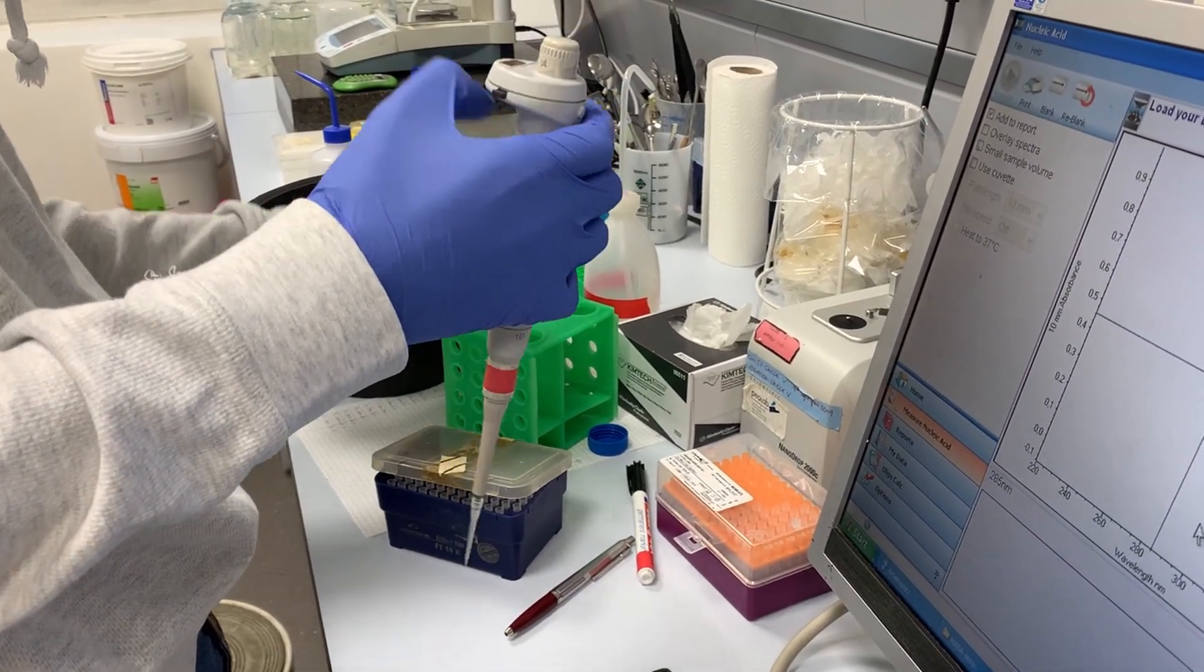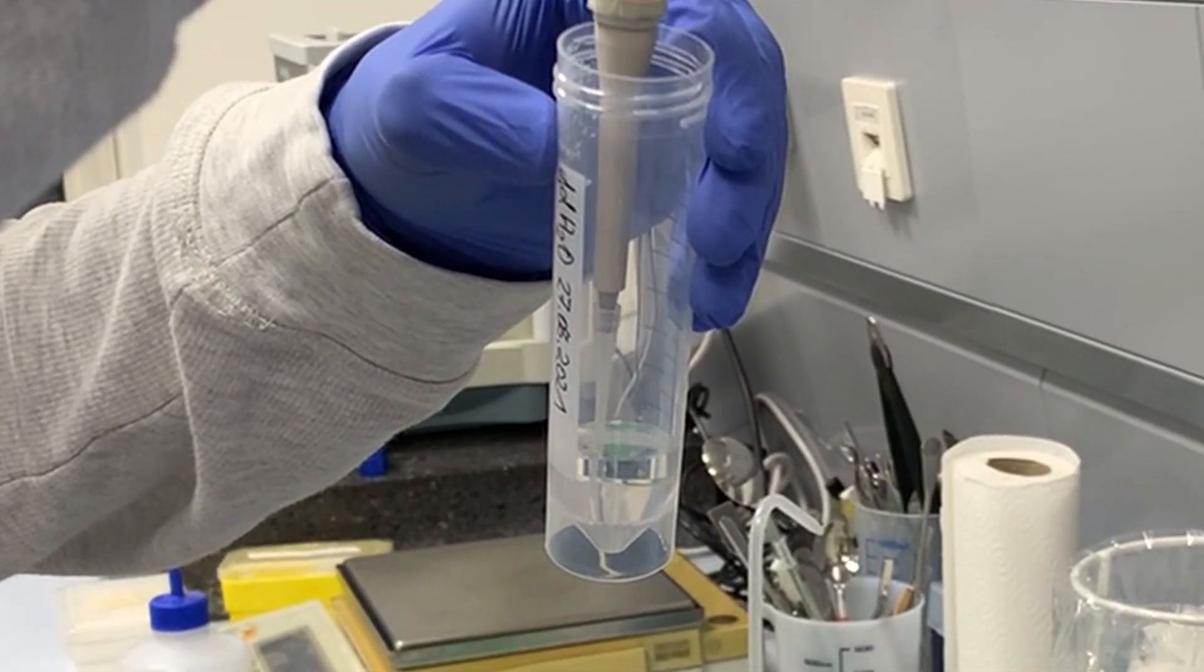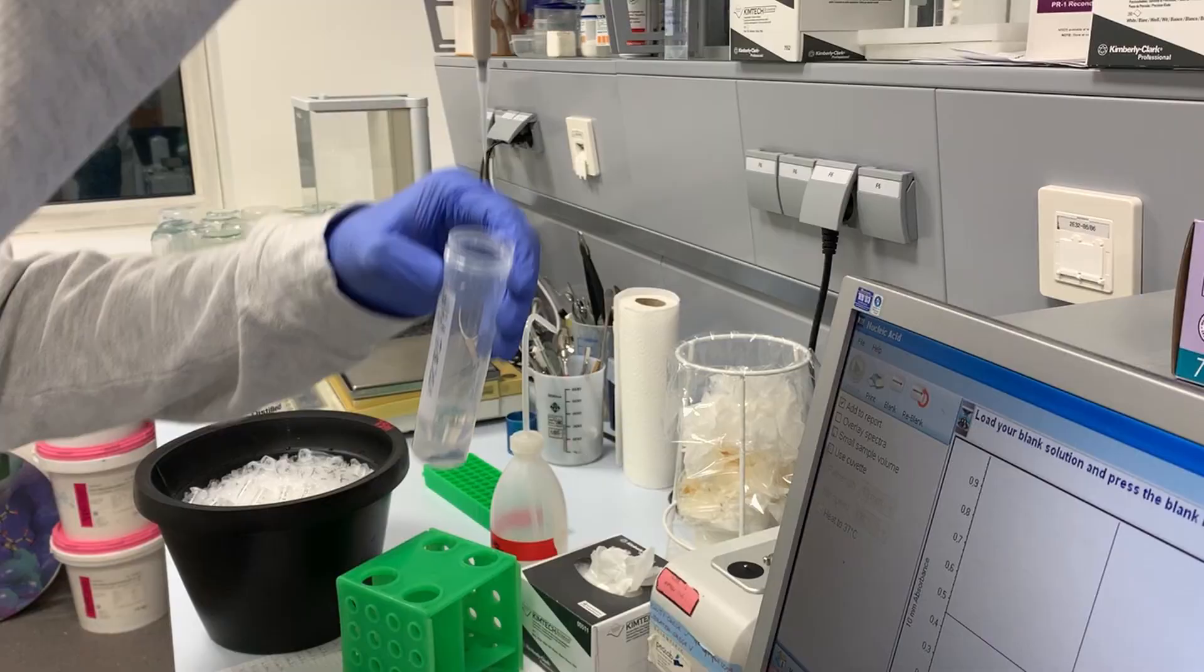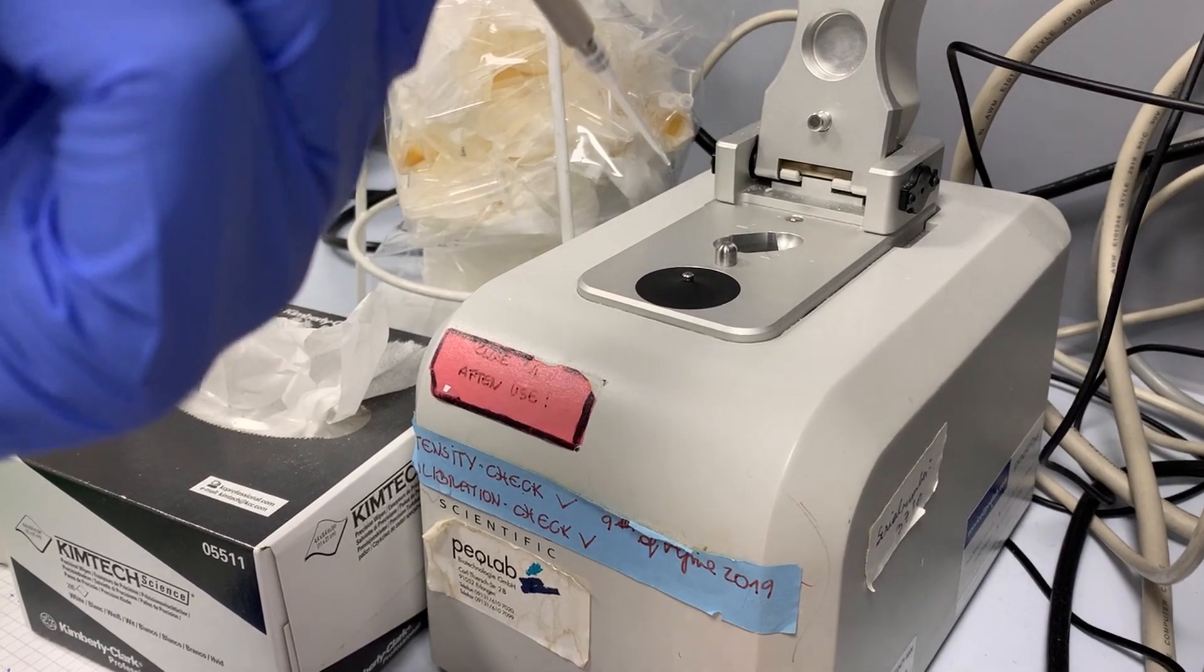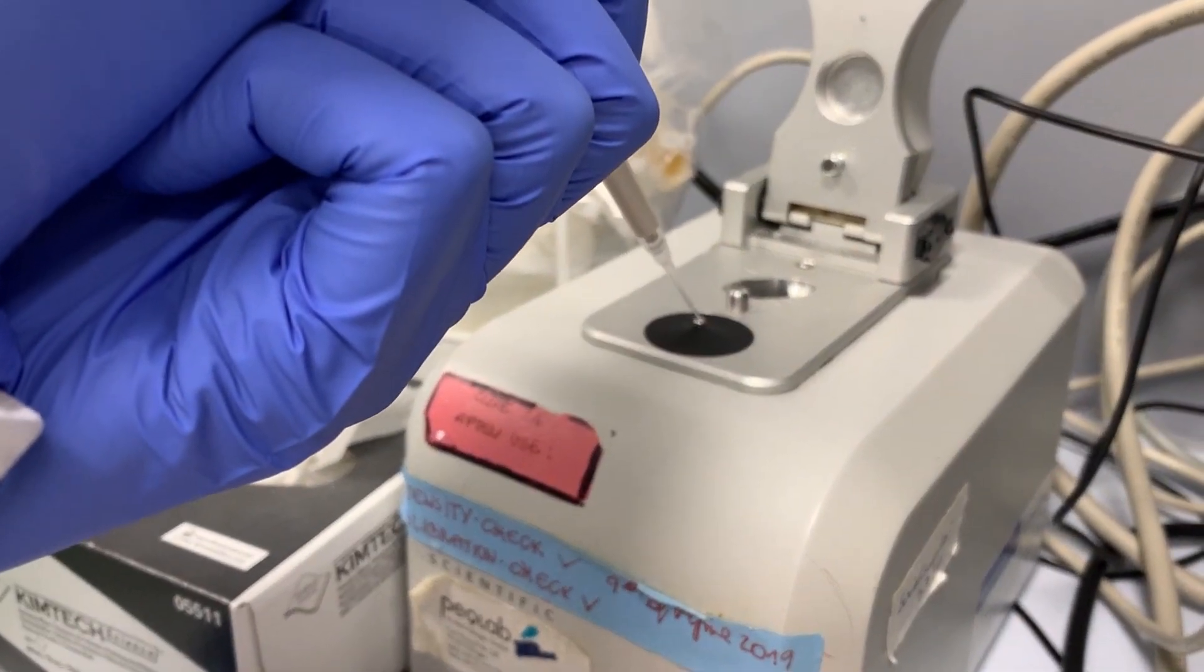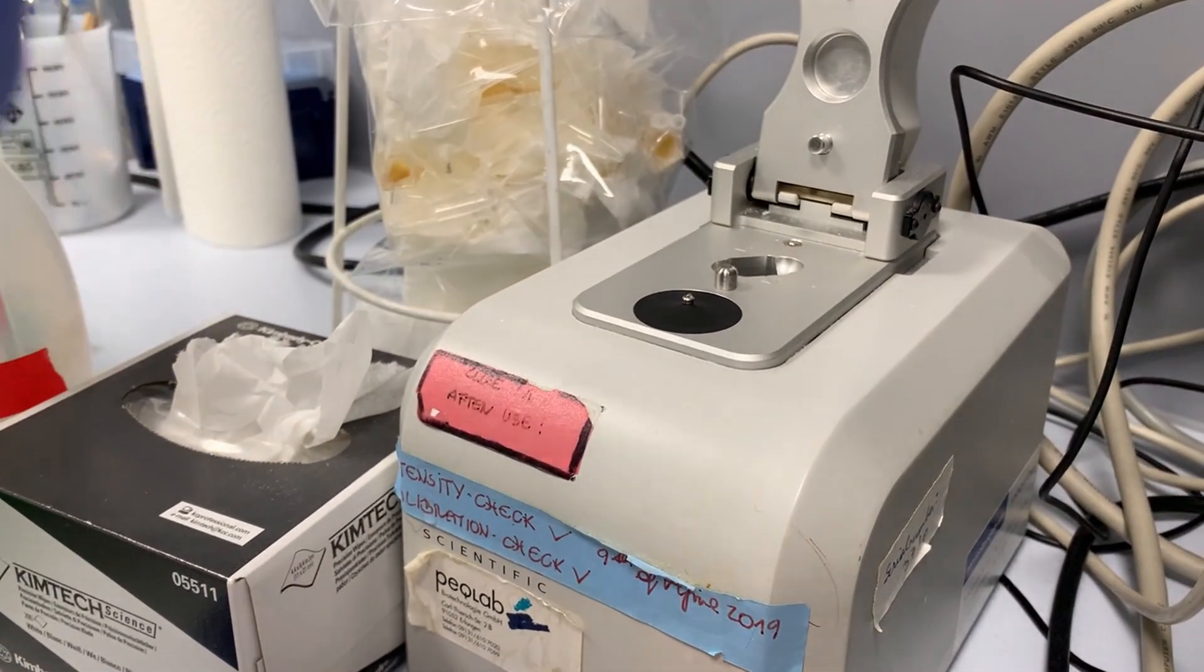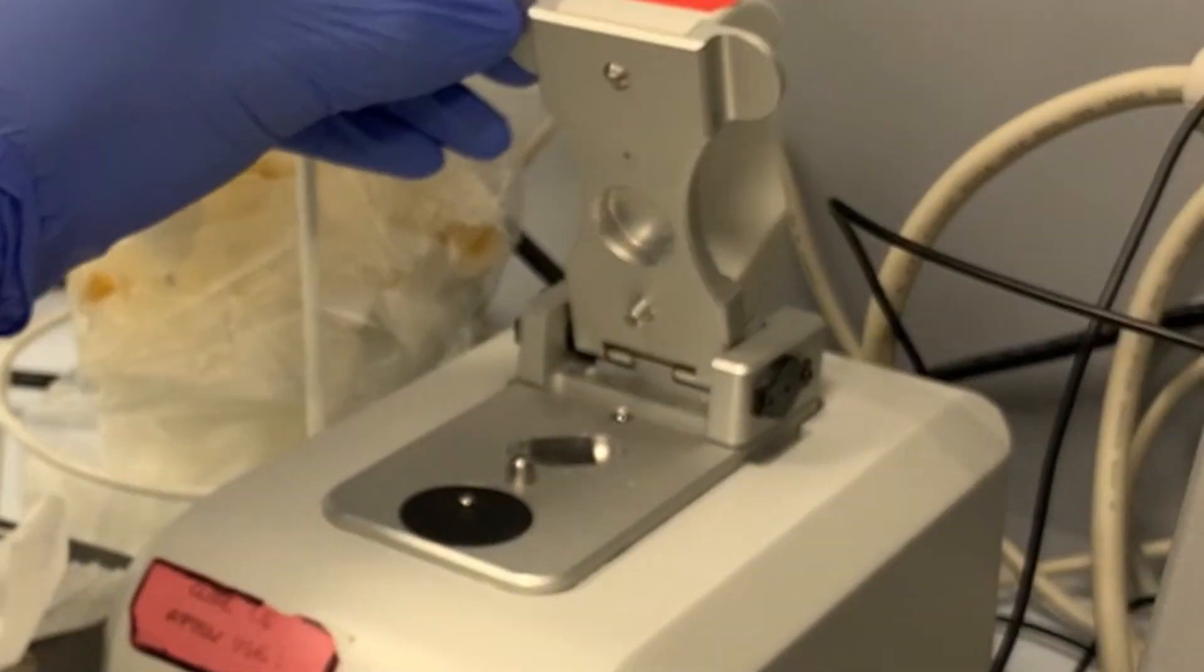You pipette one microliter of your blanking solution onto the area of measurement and try to hit the very center. Then close the lid very carefully.